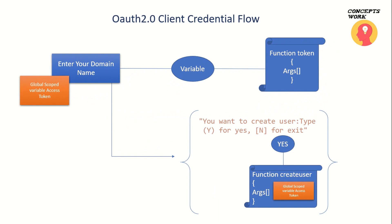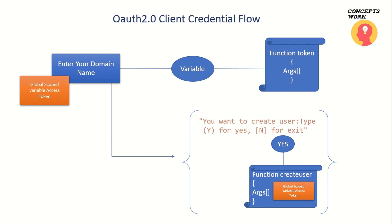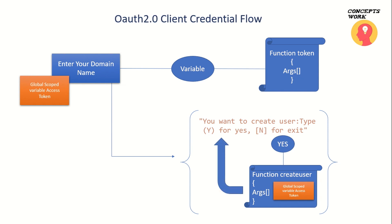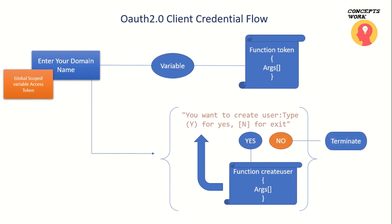Once everything is verified and you have the appropriate permissions, an access token will be saved into a globally scoped variable. This access token will then be used inside a loop. The loop prompts you whether you want to create a user. If you select yes, the access token is used inside a function called Create User. This process keeps repeating until you select no, at which point the script terminates.